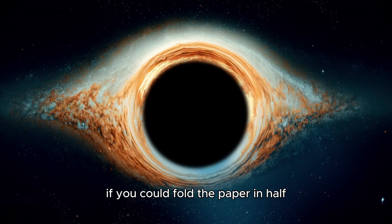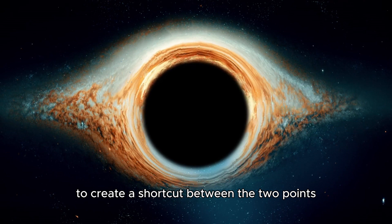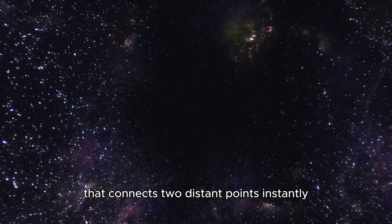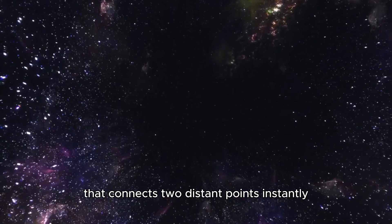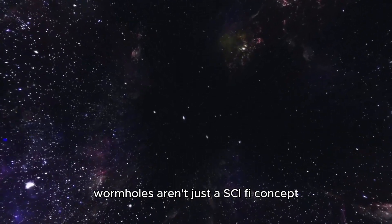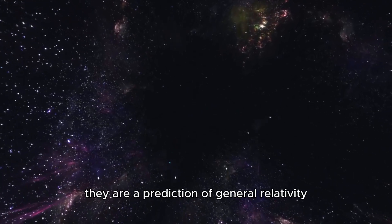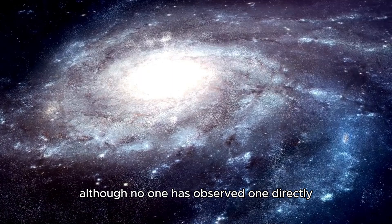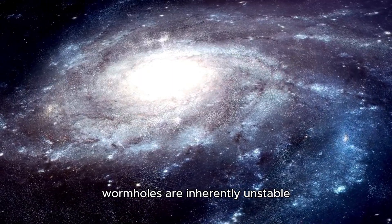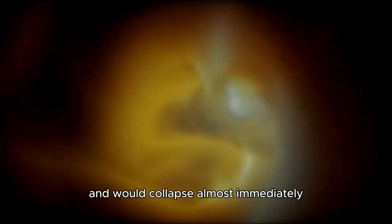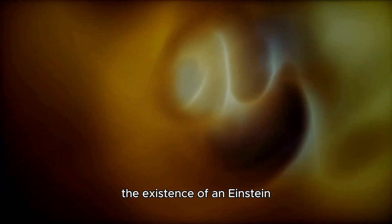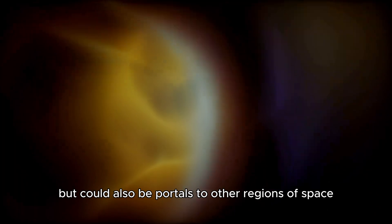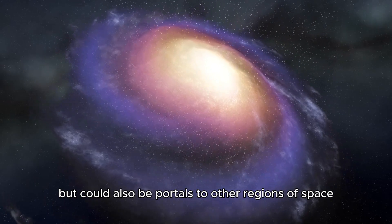If you could fold the paper in half to create a shortcut between the two points, this represents a wormhole, a shortcut through space-time that connects two distant points instantly. Wormholes aren't just a sci-fi concept. They are a prediction of general relativity. Although no one has observed one directly, wormholes are inherently unstable and would collapse almost immediately. The existence of an Einstein-Rosen bridge would mean black holes are not just cosmic vacuum cleaners, but could also be portals to other regions of space-time.